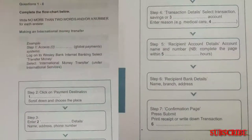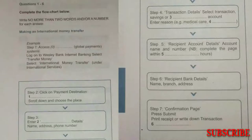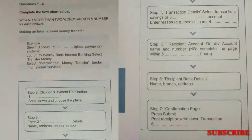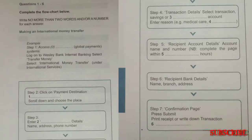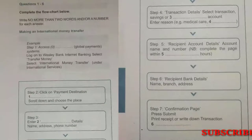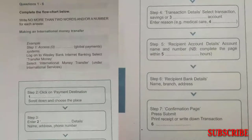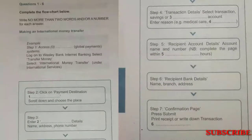You will hear a number of different recordings and you will have to answer questions on what you hear. There will be time for you to read the instructions and questions and you will have a chance to check your work. All the recordings will be played once only. The test is in four sections. At the end of the test you will be given ten minutes to transfer your answers to an answer sheet. Now turn to Section 1.